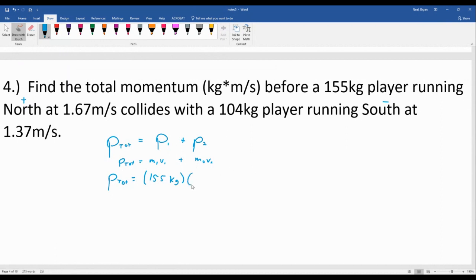So mass is here, a positive, just to make sure I remember to look at the direction there, 1.67 meters per second. And plus sign, there's another momentum here. This player's mass is 104 kilograms, but this time they're running south. So negative 1.37 meters per second.